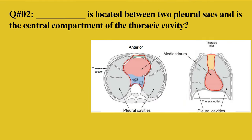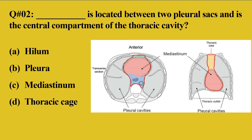Question 2: Dash is located between 2 pleural sacs and is the central compartment of the thoracic cavity. Options: A: Helium, B: Pleura, C: Mediastinum, D: Thoracic cage. The region between the 2 pleural membranes, where the heart is present, is known as the mediastinum. So the right option is C, mediastinum.